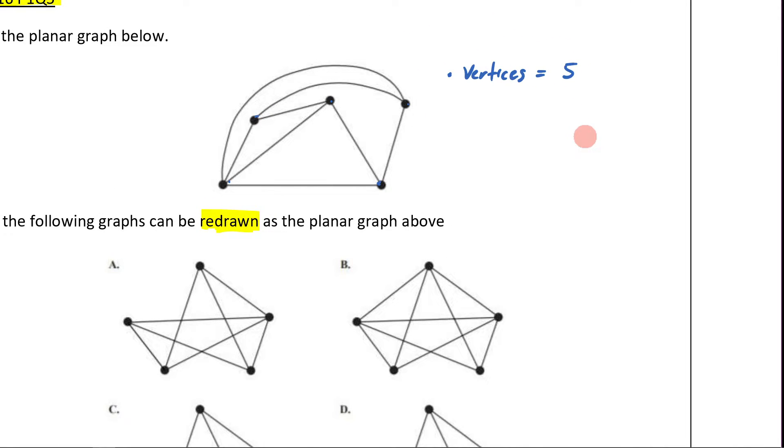So the next thing that you'd want to check is you know that isomorphic graphs must have the same amount of edges. So how many edges do I have here? Edges. 1, 2, 3, 4, 5, 6, 7, 8. Eight edges.